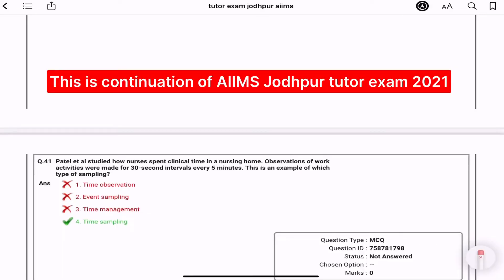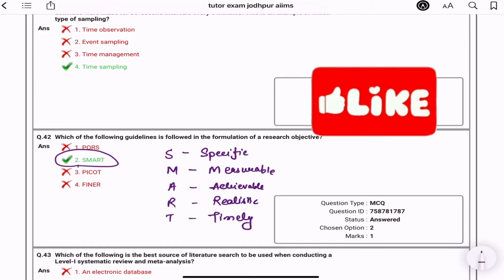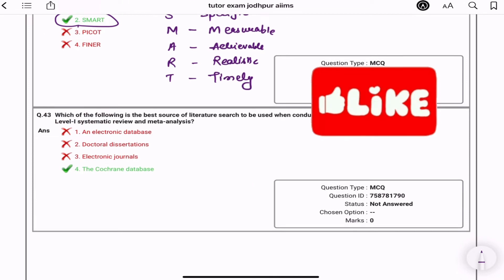Study how nurse patients spend clinical time in nursing home: observation of work activities were made for 30 seconds interval every 5 minutes. This is an example of which type of sampling? Time sampling. The next question is which of the following guidelines followed in the formulation of research objective? Answer is SMART. SMART ki full form kya hai: S is specific, M is measurable, A is achievable, R is realistic, and T is timely. These all should be fit for your research objective.